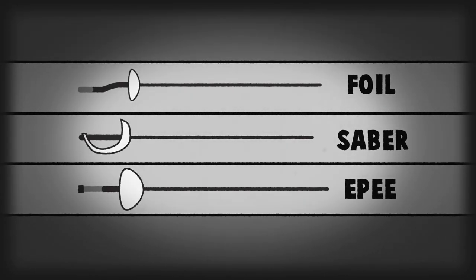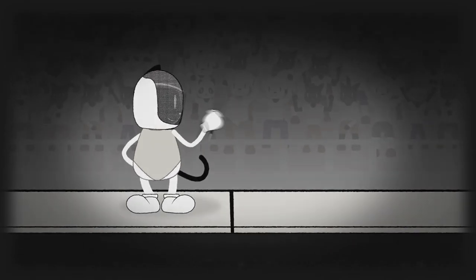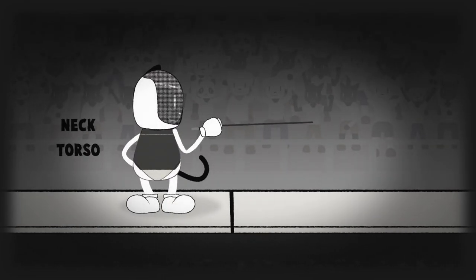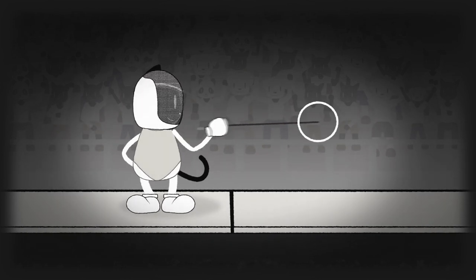Fencing has three disciplines. Foil, a light thrusting weapon used to strike the torso, neck, groin, and back, with points scored using only the tip of the blade.